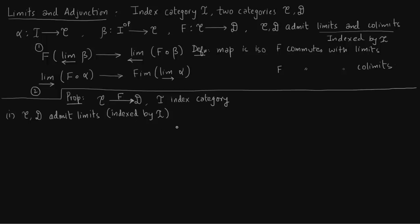Assume that these categories C and D admit limits indexed by this index category I. Now F admits the adjoint functor G. You have F going from C to D and a functor G which is adjoint coming in the opposite direction. F is left adjoint to G. If this statement is true...